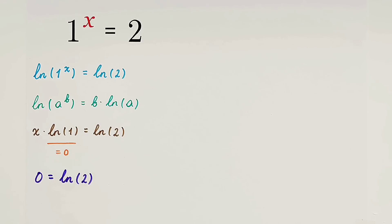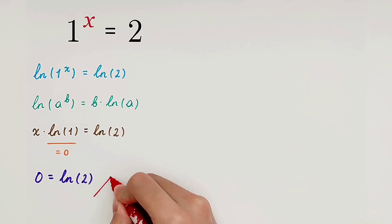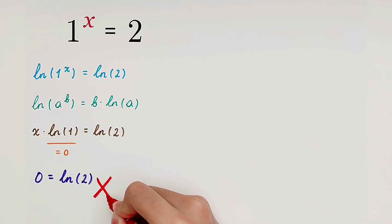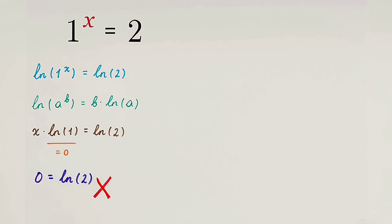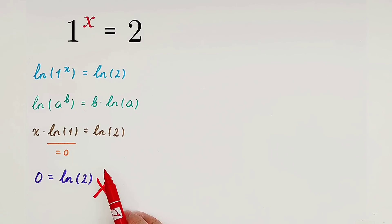We know that the natural log of 2 is absolutely not equal to 0. So what does it mean? 0 is equal to the natural log of 2 — that is false. So it cannot exist. You might say: no solutions. However, that's wrong. Here, we only proved that this equation doesn't have any real solutions. You can only say this equation has no real solutions.